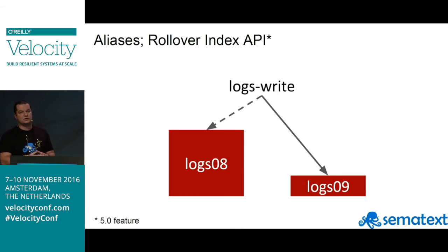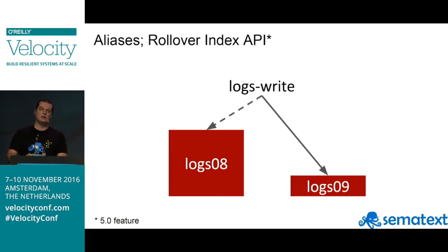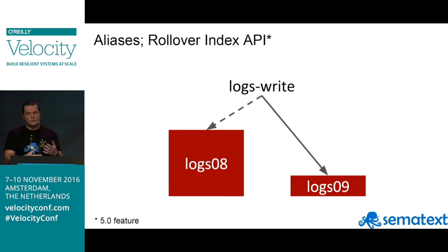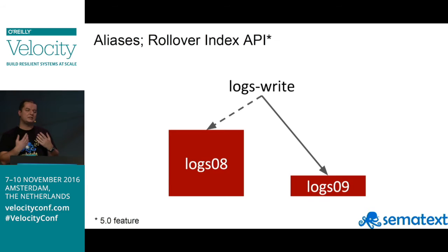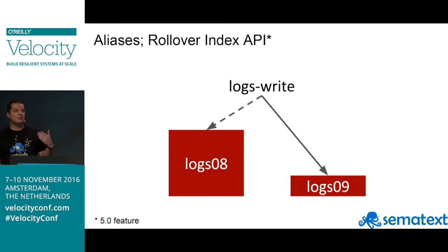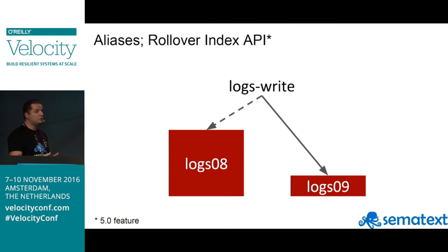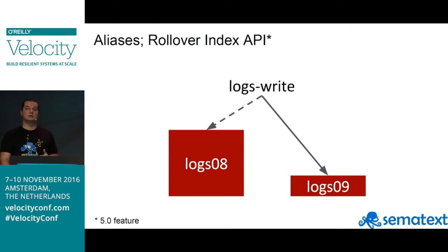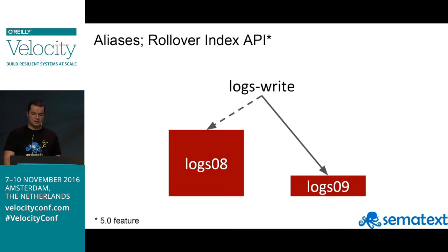With Elasticsearch 5.0, you can use the rollover index API to say: at this given point in time and data size, roll over the alias and start a new index. The write alias gets updated and your log shippers keep using the same alias, so indexing continues as if nothing happened. In earlier versions like 2.4 or 2.3, you update the alias manually or use something like Curator to trigger the rollover.